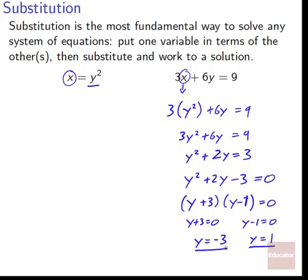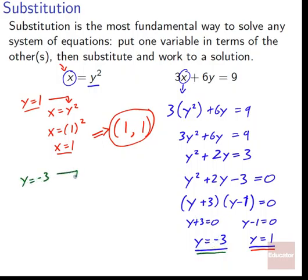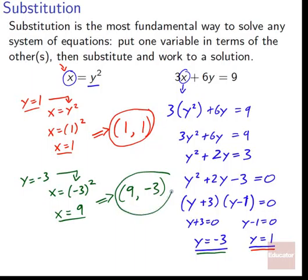Those are two possible worlds. In one world (the red world), y equals 1. We plug that into x = y², so x = 1² = 1. The point (1, 1) is an answer to both equations. In the other world (the green world), y equals −3. We plug that in: x = (−3)² = 9. So x = 9, y = −3, giving the point (9, −3) as the other solution. That's how you do it by substitution.